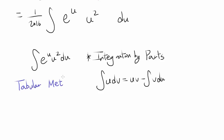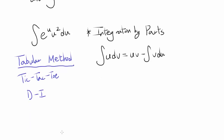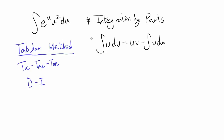The tabular method of integration by parts is sometimes called the tic-tac-toe method, or the DI method — where DI stands for differentiation and integration. That's aptly named, because we are going to have differentiation and integration side by side. This tabular method works the same as integration by parts, just in a more organized, easy-to-remember way.